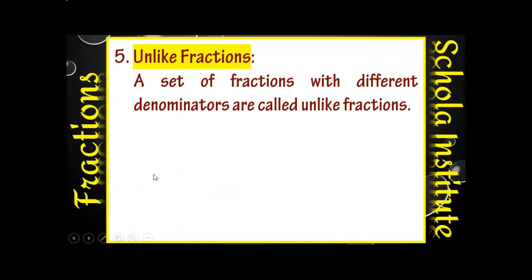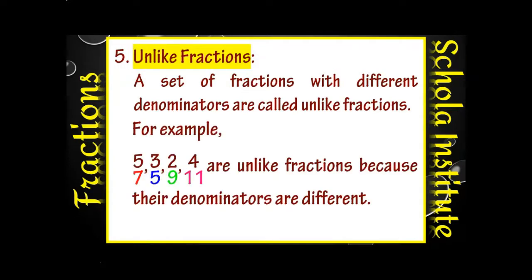Unlike में उल्टा है — a set of fractions with different denominators। बहुत सारे fractions दिये होंगे लेकिन सबके denominator अगर अलग-अलग हैं तो वो कहलाएँगे unlike fractions। Example: 5 by 7, 3 by 5, 2 by 9, 4 by 11 are unlike fractions — denominators 7, 5, 9, 11 are all different numbers, इसलिए यह unlike fractions हैं।